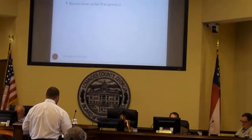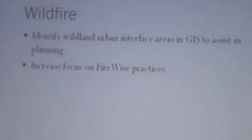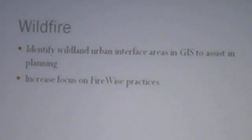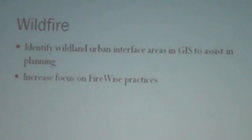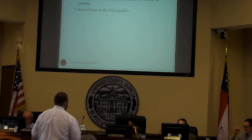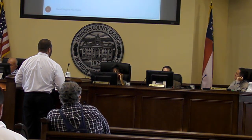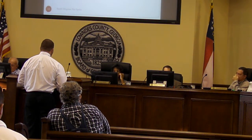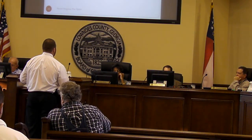For wildfires, we want to identify the wildland-urban interface areas and map those in GIS. We have a little of that data, but we want to make sure it gets incorporated into our GIS mapping so it can help our planning staff know where these areas are. We'll also continue working with the Georgia Forestry Commission and their Firewise Program, encouraging new developments to incorporate Firewise practices.